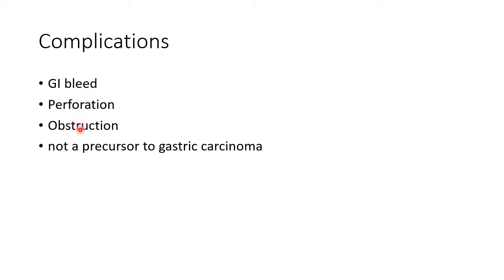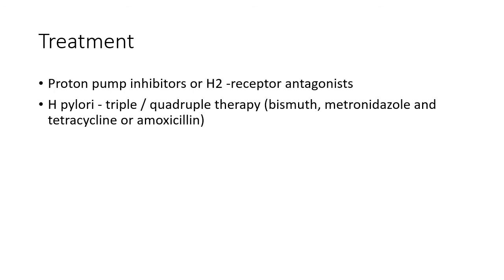The complications of peptic ulcer disease include gastrointestinal bleeding, perforation, and obstruction. It is not a precursor to gastric carcinoma. Treatment of choice is proton pump inhibitors; H2 receptor antagonists can also be used. In case of H. pylori infection, we have to give triple or quadruple therapy, which includes proton pump inhibitors along with bismuth.